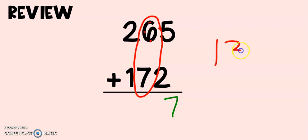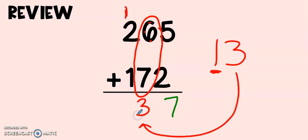Now if I have 13 tens I can see that I've made a new hundred. So I'm going to put my new hundred over in my hundreds place and take my three tens down to the bottom into the tens place.